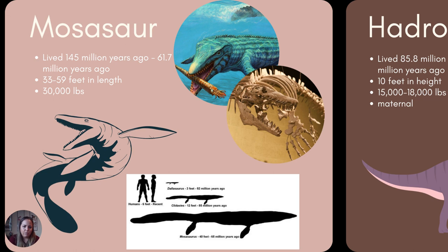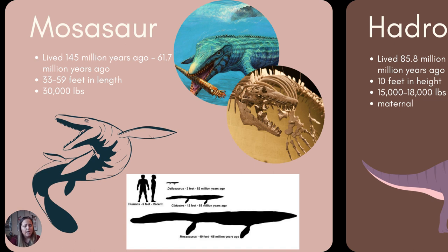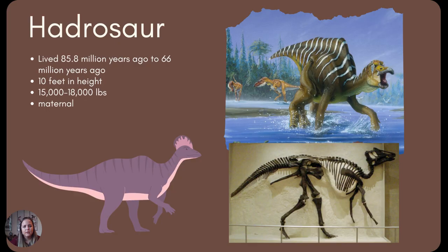The mosasaur lived around the same time, a little closer to the extinction event — 145 million years ago to about 65 million years ago, when most dinosaurs disappeared. They were also very long but a little more like a crocodile or alligator, ranging from 33 to 59 feet long, with a lot of variation in size. The much larger ones would eat plesiosaurs, dolphins, and even smaller mosasaurs. They were up to 30,000 pounds and also disappeared with the dinosaurs.